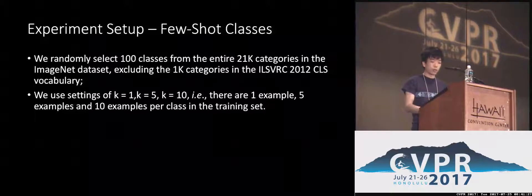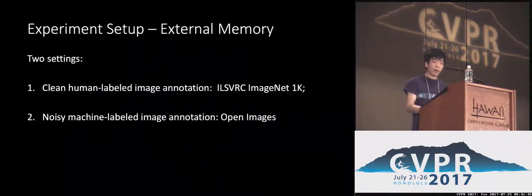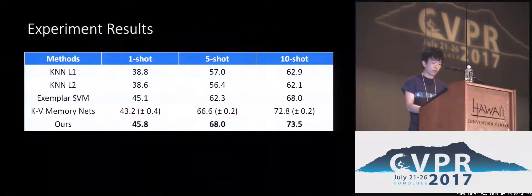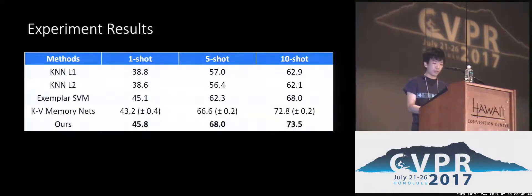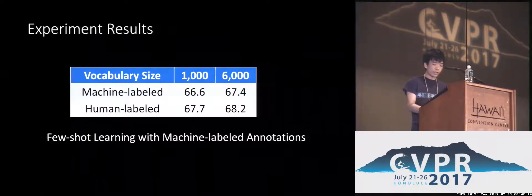We randomly select 100 classes from the entire 21,000 categories in the ImageNet dataset. In the training set, we use one-shot, five-shot, and ten-shot settings. For the external memory, we conduct two different settings: one is the human-label ImageNet 1000 dataset, and the other is the machine-label Open Images dataset. We beat other state-of-the-art methods on the few-shot object recognition task where ImageNet is used as external memory. We would like to highlight the strong performance of 68% accuracy with only five examples per class. For the results using Open Images, we compare the performance between machine-label annotation and human-label annotation, and we can see that the performance gap is very minor — about 1% absolute accuracy.